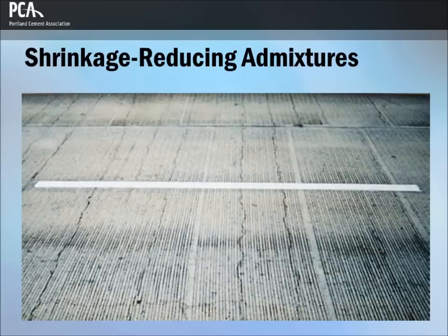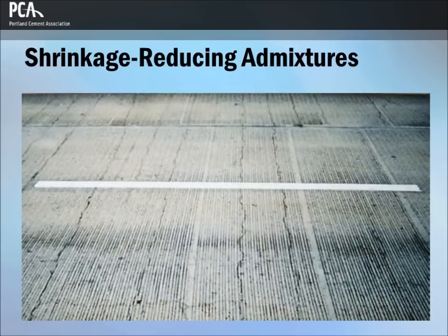Propylene glycol and polyoxylalkylene alkyl ether have been used as shrinkage reducers. Drying shrinkage reduction between 25% and 50% have been demonstrated in laboratory tests. These admixtures have negligible effects on slump, but can impact air content and may possibly require an increase in the dose of air entraining admixtures to achieve a target air content.